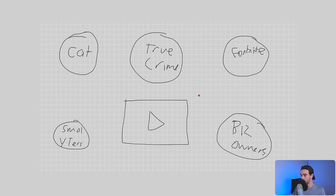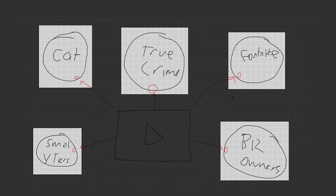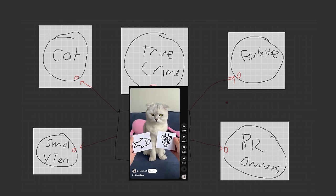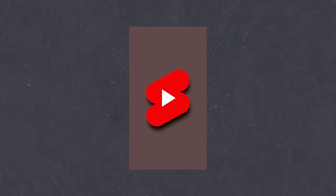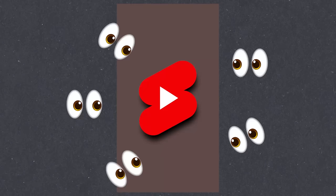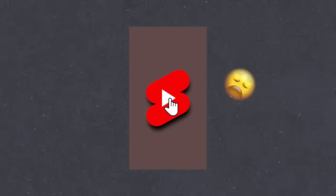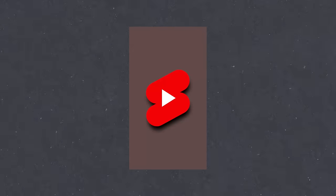For example, what YouTube might do for this particular piece of content is it might promote it to a small amount of true crime lovers, a small amount of cat lovers, a small amount of small YouTubers. When it's testing our content with all the different audiences, what it's looking for is how do these audiences respond to your content? Do they click on it? Do they watch it all the way to the end? Do they click on it and only watch it for a little bit? Do they not click on it at all?